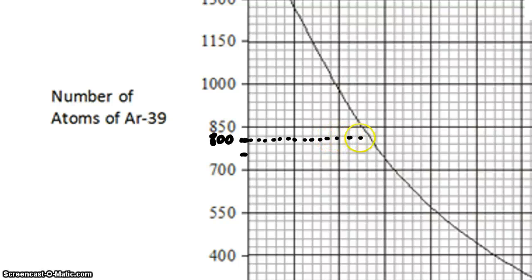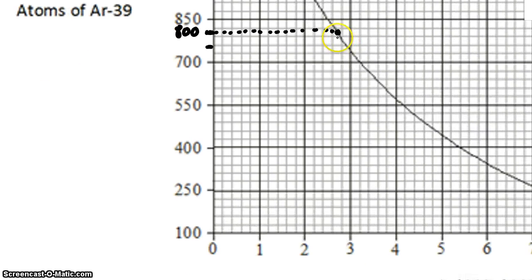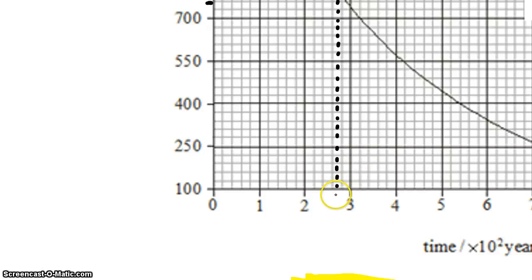We'll take that over to the curve and find out how much time has elapsed. Reading this scale, it looks like the marking is about two-thirds of the way between two and three.